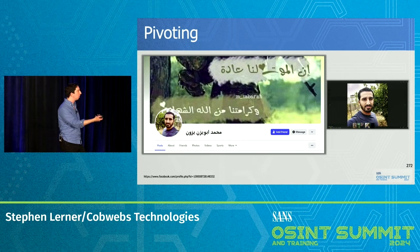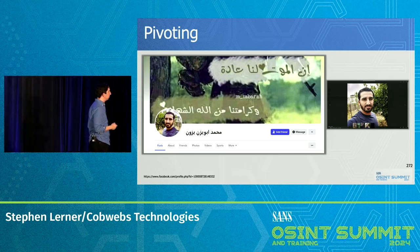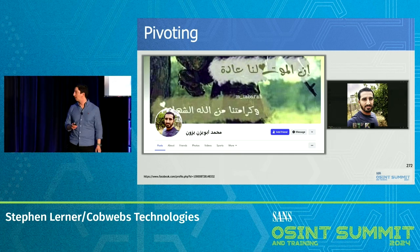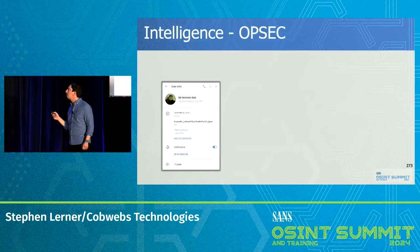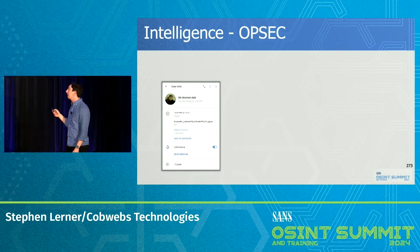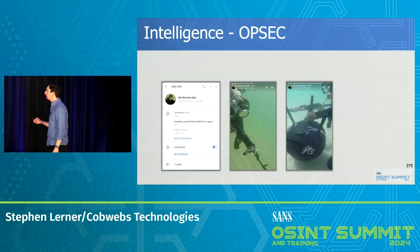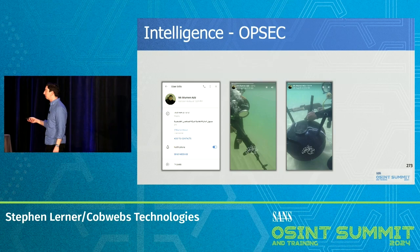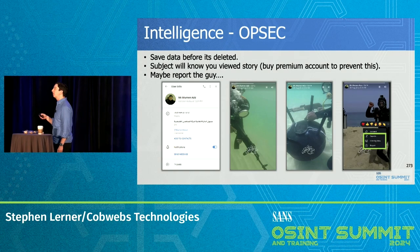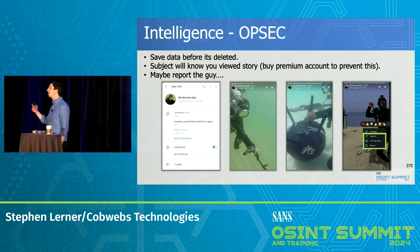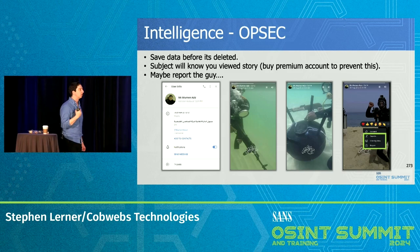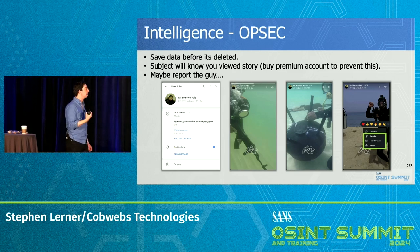So, pivoting: we have the person's Telegram profile on the right and we can easily find his other social media profiles. Interesting that the picture is mirrored — not sure exactly why. You have to be careful when looking at somebody's stories on Telegram because they can see who looked at it. If you buy a premium account, they won't be able to see that you looked at their stories — kind of like LinkedIn where if you have a premium account, you can view others without them knowing. And you can also save the information in case the story goes offline or they delete it.